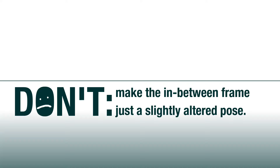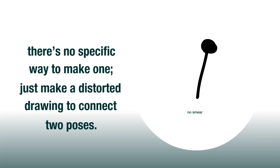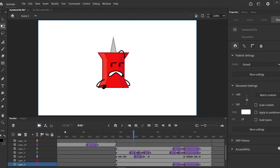This is mostly optional, but if you're looking for that extra emotion, don't make the in-between frame just a slightly altered pose. Do make smear frames. Smear frames are common in animation to act as motion blur for big movements. There's no specific way to make one — just make a distorted drawing to connect two poses. This way extreme motions feel less stiff and more lively. Now your animation should look like this.